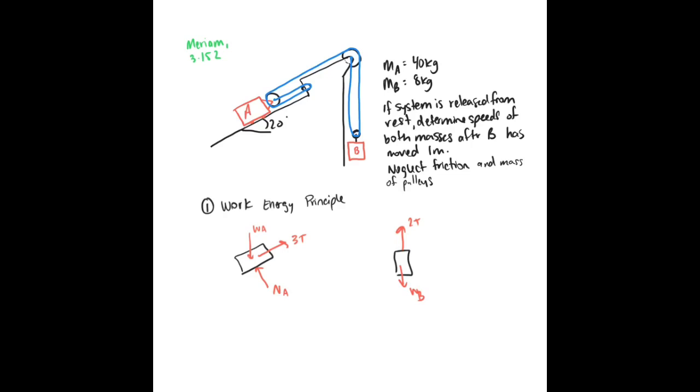So instead what I'm going to do is sort of a force balance. So I'm going to start over here at block A and I'm going to see in the x-direction. So we know that we have minus 3T plus WA sine of 20 degrees, because here this angle would be 20, is equal to 0. And let's solve what that T would be. So this T would be equal to 44.7 newtons if you plug in here the mass of A and gravity.